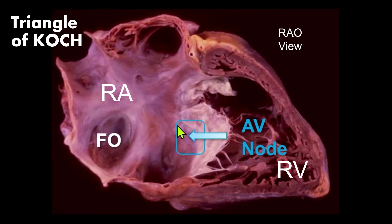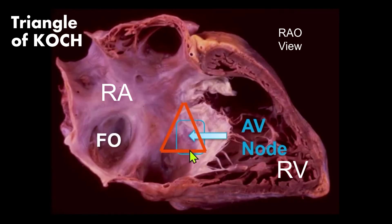The location of the AV node is within the triangle of Koch, located in the right atrium of the heart. This triangle is formed by the septum leaflet of the tricuspid valve, the tendon of Todaro, and a line connecting these two at the level of the coronary sinus roof. Inside the triangle sits the AV node.